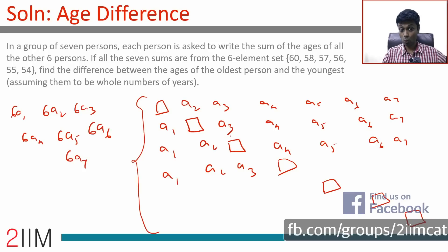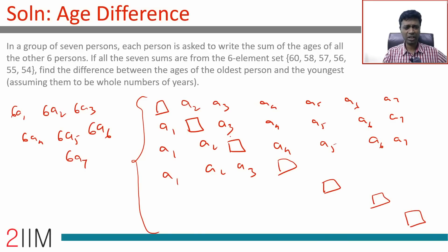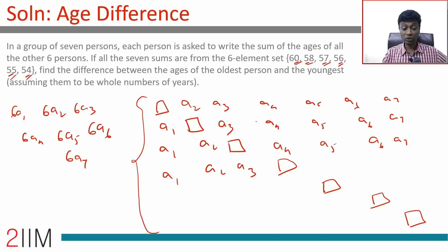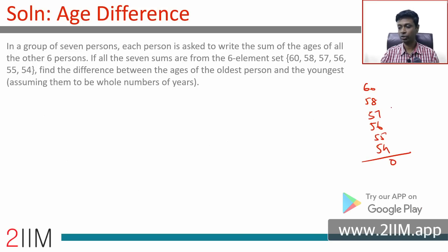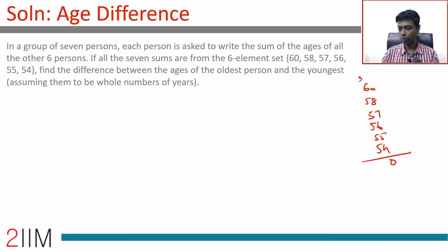So the sum of all seven sums equals 6 × (a1 + a2 + a3 + a4 + a5 + a6 + a7), which equals 60 + 58 + 57 + 56 + 55 + 54 plus whichever number appears a second time. Adding 60 + 58 + 57 + 56 + 55 + 54 gives 340. So 340 + x = 6 × (total sum of ages).